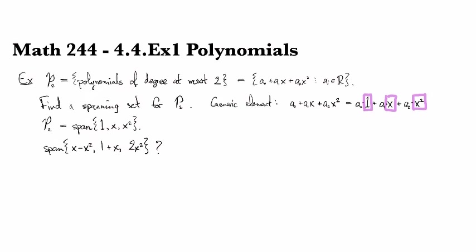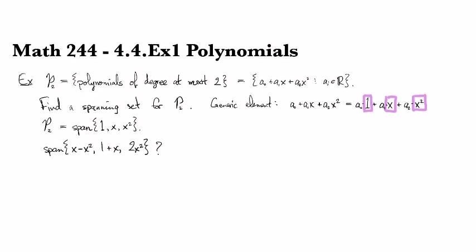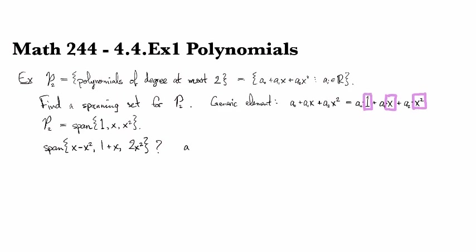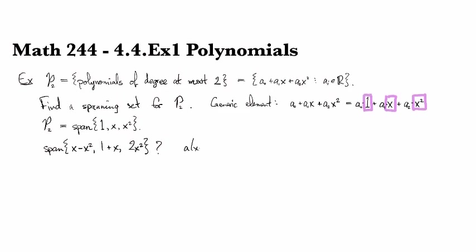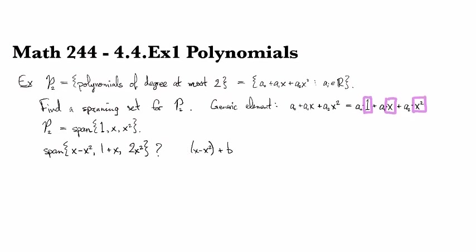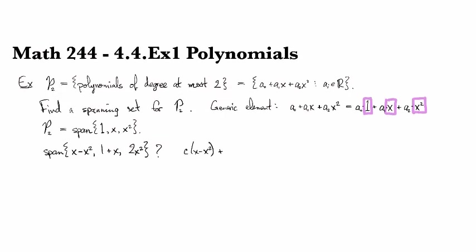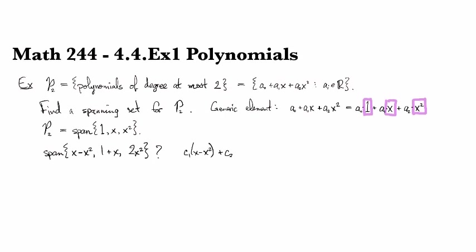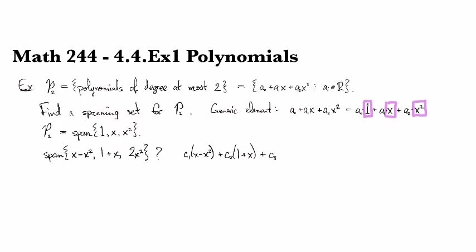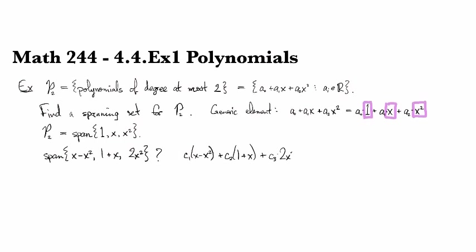Well, let's see. In order for that to be the case, we need to be able to have a times x minus x squared plus b times—actually, you know what? Let me call these all with coefficients c1, c2, just like we were doing before.